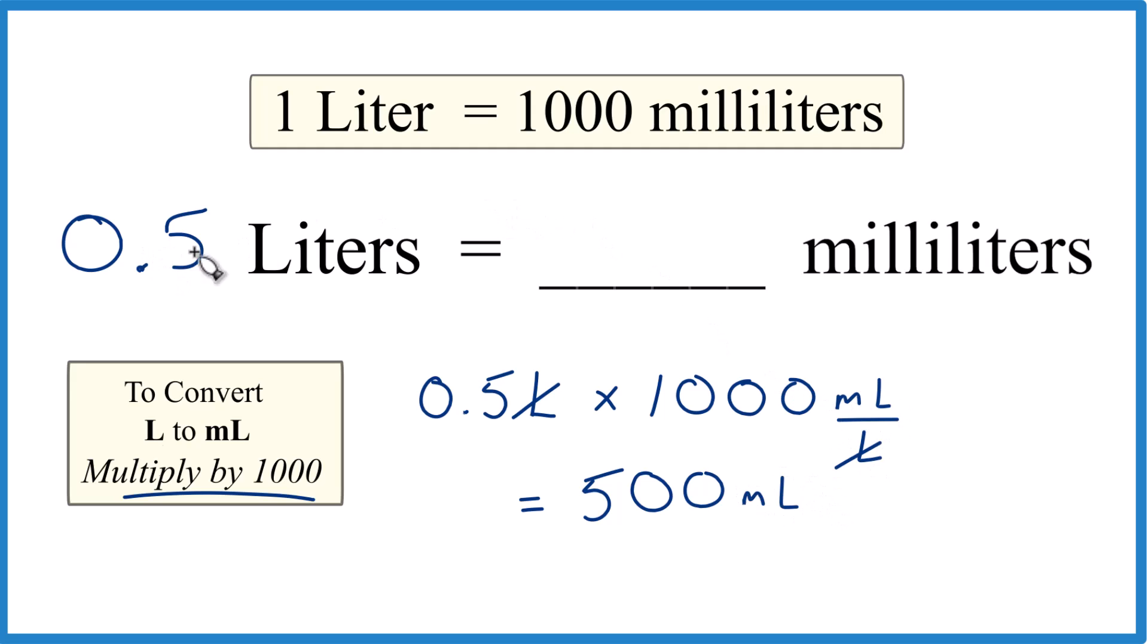So in answer to our question, 0.5 liters equals 500 milliliters. That's it. This is Dr. B. Thanks for watching.